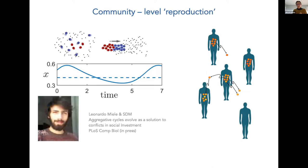All this recent work asks how reproduction at the collective level gets established. But one can also conceive that you don't really need endogenous generation of offspring — you can also have an exogenous structure imposed. This is what Paul Rainey and colleagues have recently called a scaffold. You impose a scaffold on a community, and as a consequence this community will behave as a super-organism or something that goes above the level of cells.